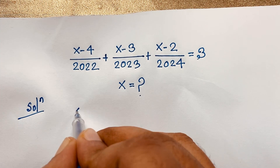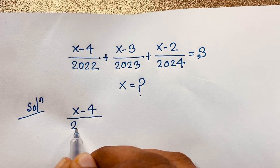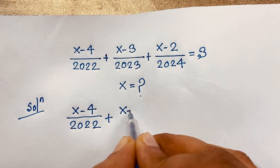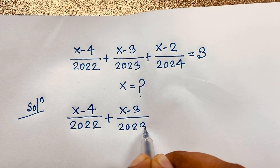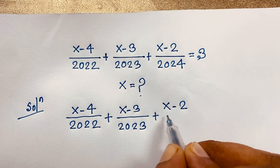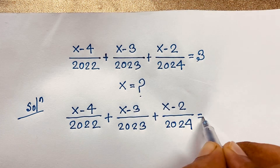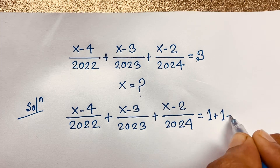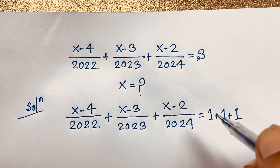Our question is (x minus 4) over 2022 plus (x minus 3) over 2023 plus (x minus 2) over 2024. Notice that on the right-hand side, 3 equals 1 plus 1 plus 1.